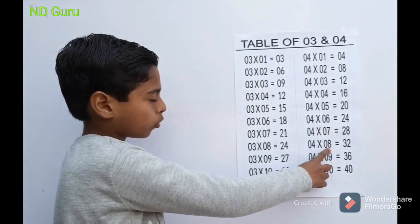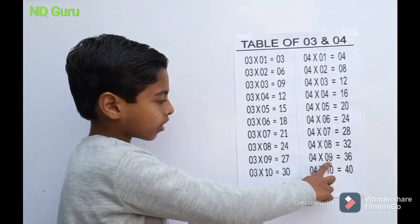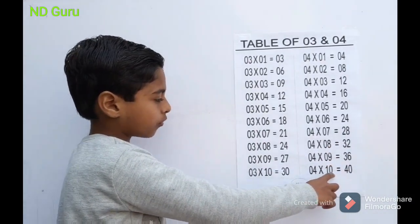4 8s are 32, 4 9s are 36, 4 10s are 40. Thank you.